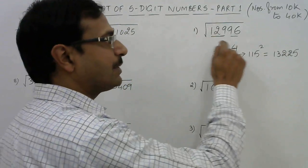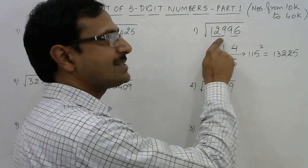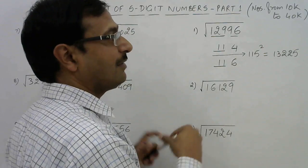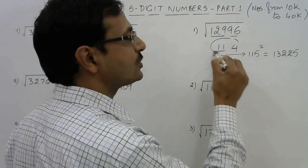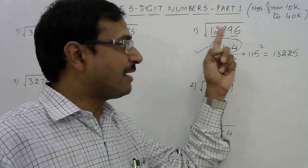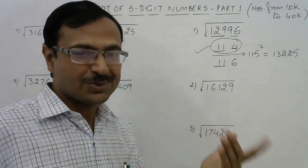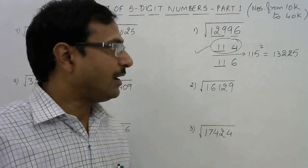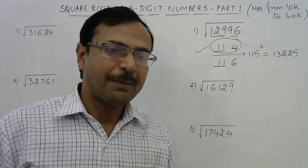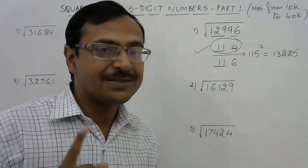Now compare: 12996 is smaller than 13225. If the original number is smaller than the square of the intermediate number, the answer is the smaller option — so 114 is our answer. If the number had been greater than 13225, the answer would be 116. Check with a calculator: 114 × 114 = 12996. Correct!